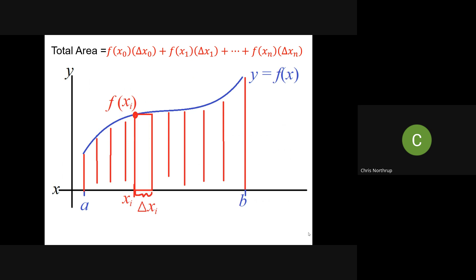A fancy way I could write that is using sigma notation. So the sum i goes from zero to n of f of x sub i times delta x sub i, kind of why I use that subscript notation there. So that would be the total area, but we know that that's not going to be the exact area, even if we used a hundred rectangles or a bajillion rectangles.